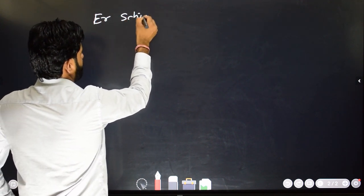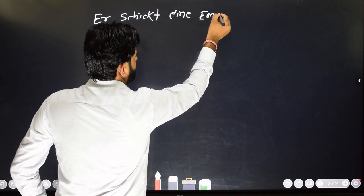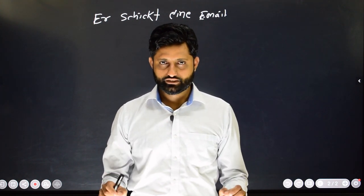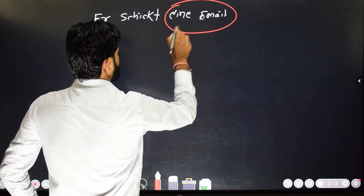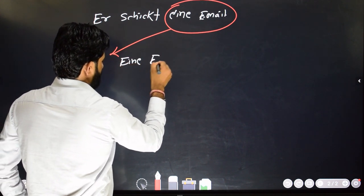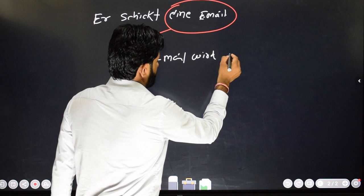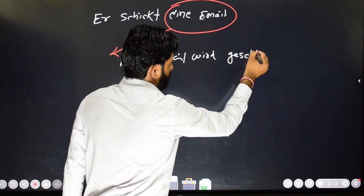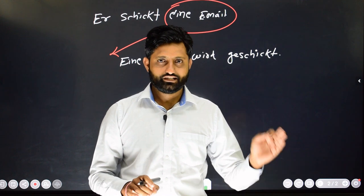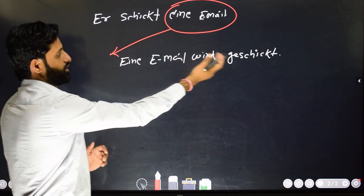Let's take more examples. 'Er schreibt eine E-Mail.' This is the active sentence. If I need to convert this sentence into passive voice, I will bring the object as subject. So this will be 'eine E-Mail.' The conjugated form of 'werden' will be 'wird', and the Partizip II is 'geschrieben.' So: 'Eine E-Mail wird geschrieben.' In active voice, if we have an accusative object, that accusative object will become the nominative subject in passive voice.